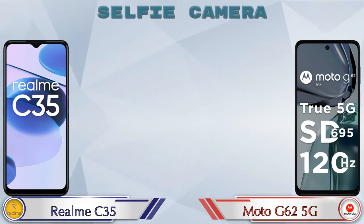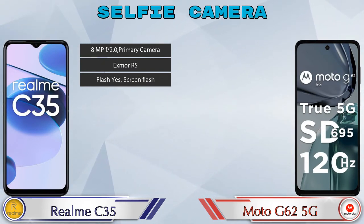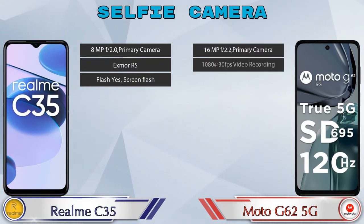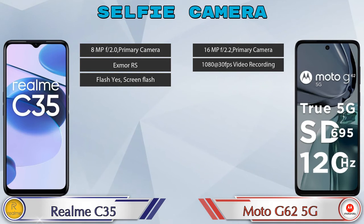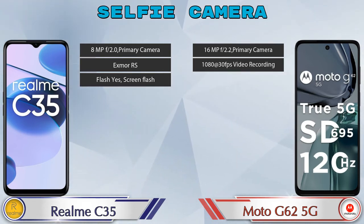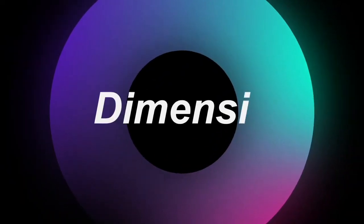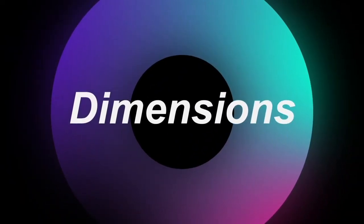Now let's talk about the front selfie camera. The Realme Narzo 35 has a single camera with three different features available, and the Moto G62 5G also has a single camera with two features available. Now let's check the details about dimensions.